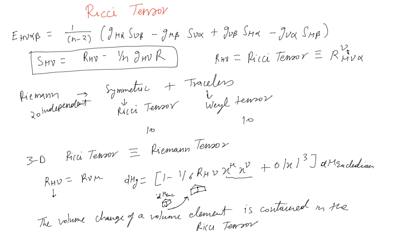How a volume element changes volume as it moves on a curved space is contained in the Ricci tensor. This is direct proportionality. The new volume obtained is some Euclidean volume plus this new component which depends on the Ricci tensor R mu mu. So that is the physical understanding of the Ricci tensor.